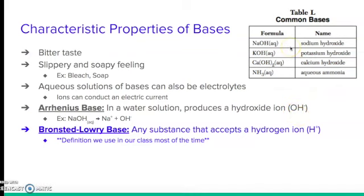We're going to use the Bronsted-Lowry base definition because it expands things a little bit. We don't necessarily need that OH hydroxide ion for something to be a base. If you go to Table L in the reference table, most of our bases do have that OH — sodium hydroxide, potassium hydroxide, and calcium hydroxide. However, ammonia is a base but does not have an OH ion. Using the Bronsted-Lowry definition expands what falls under our umbrella of a base.